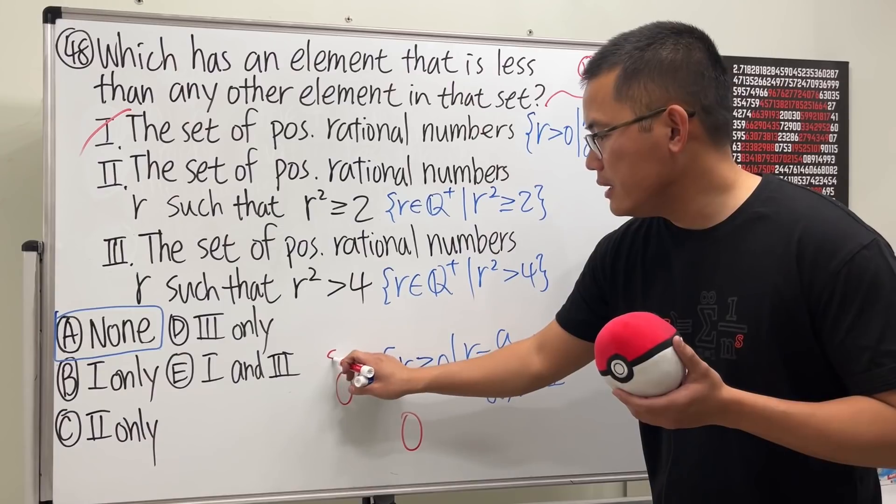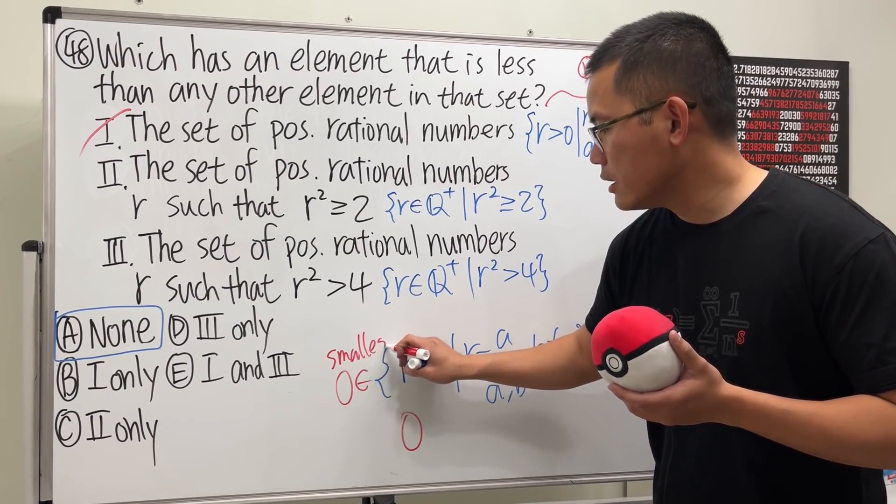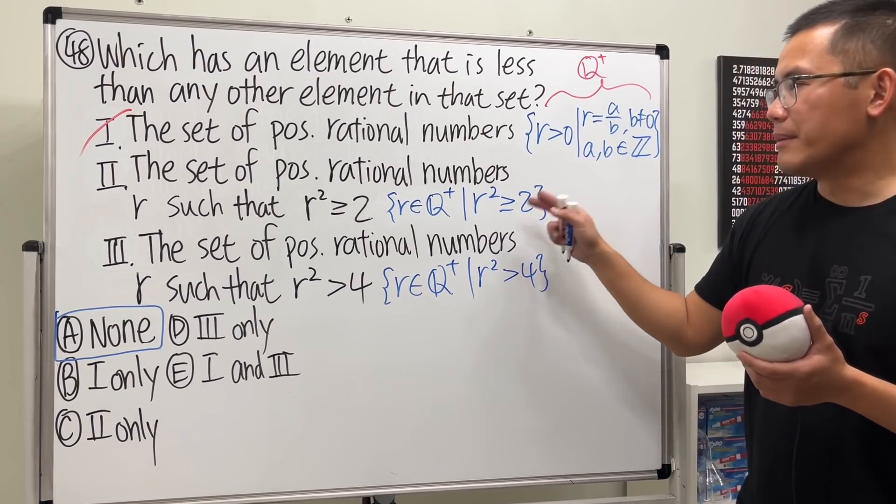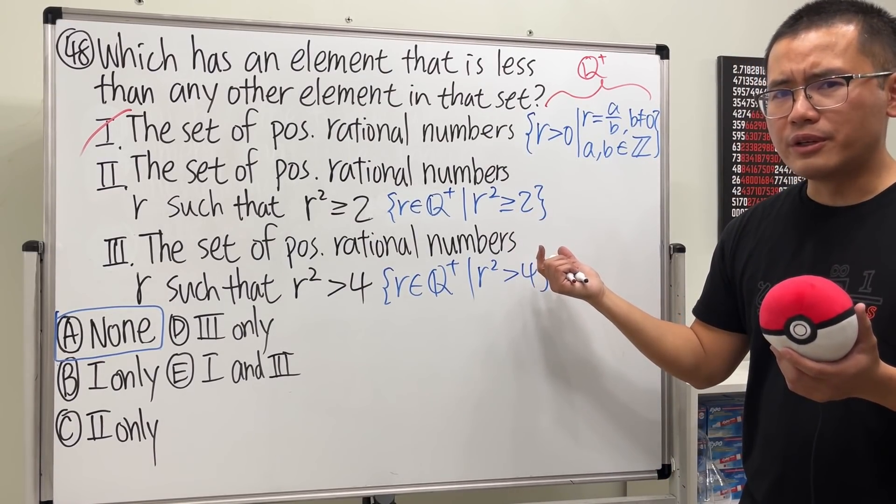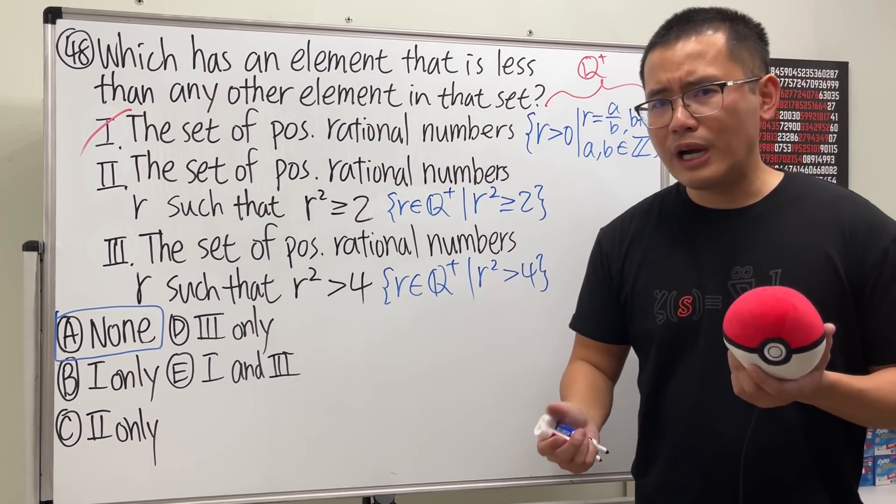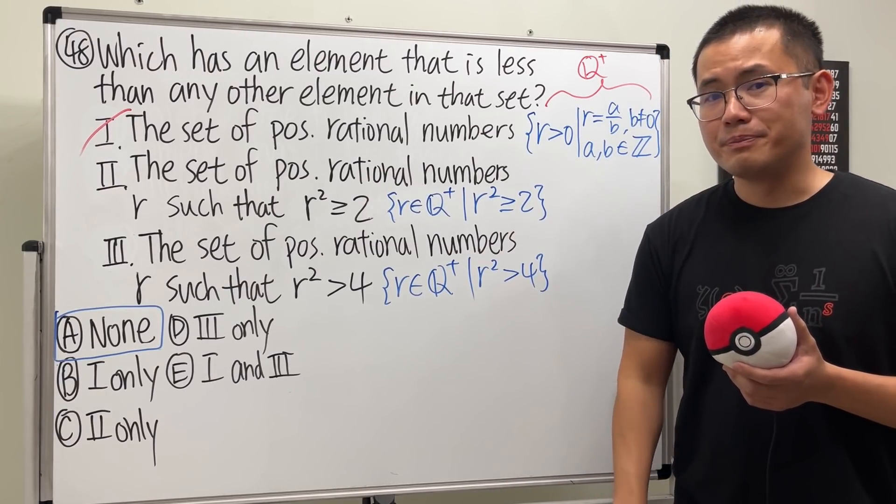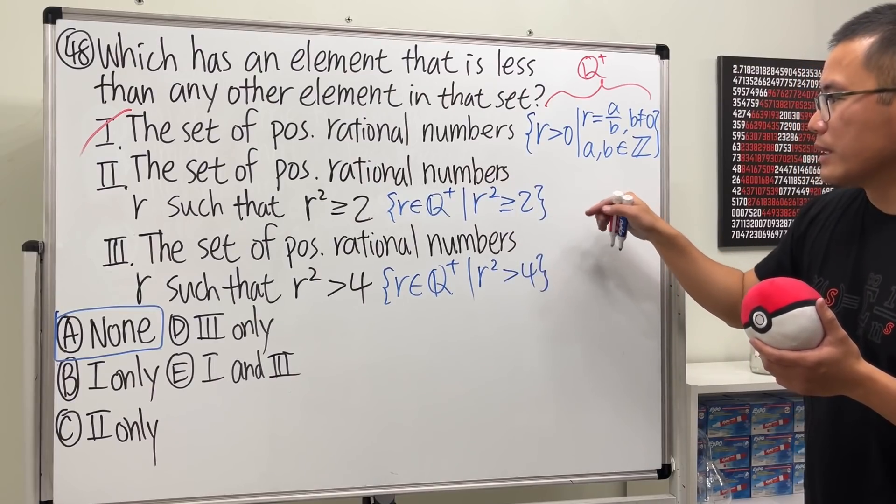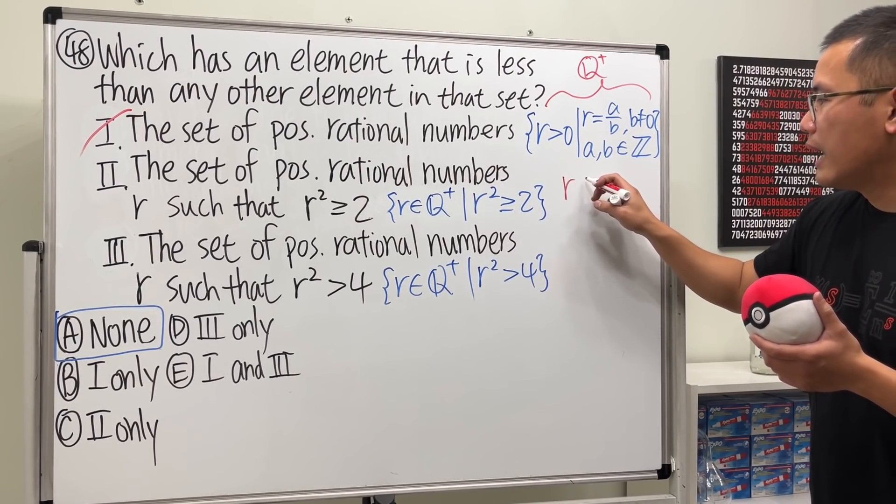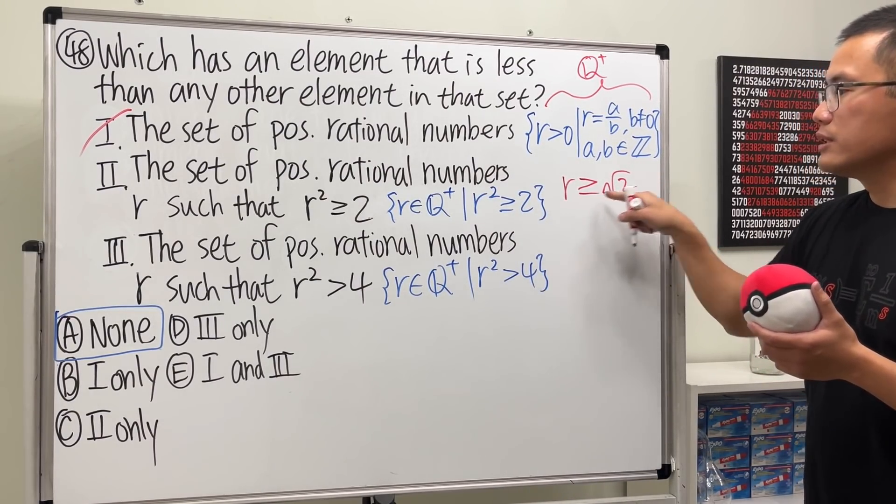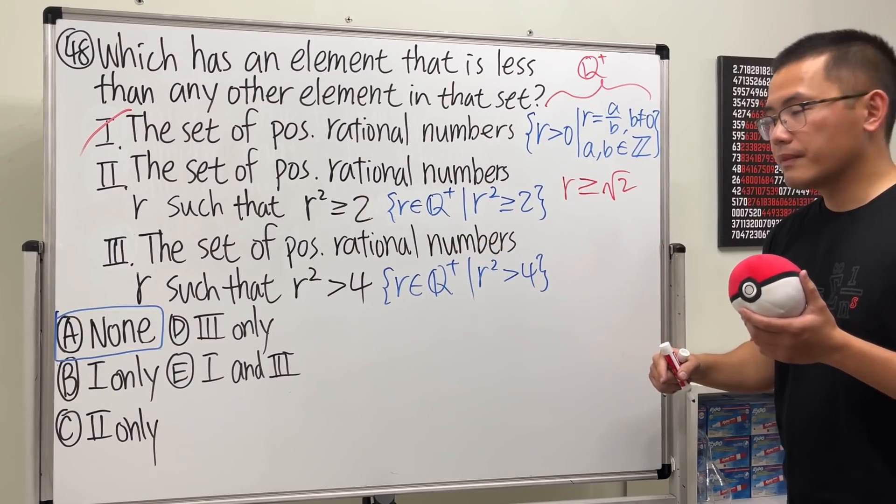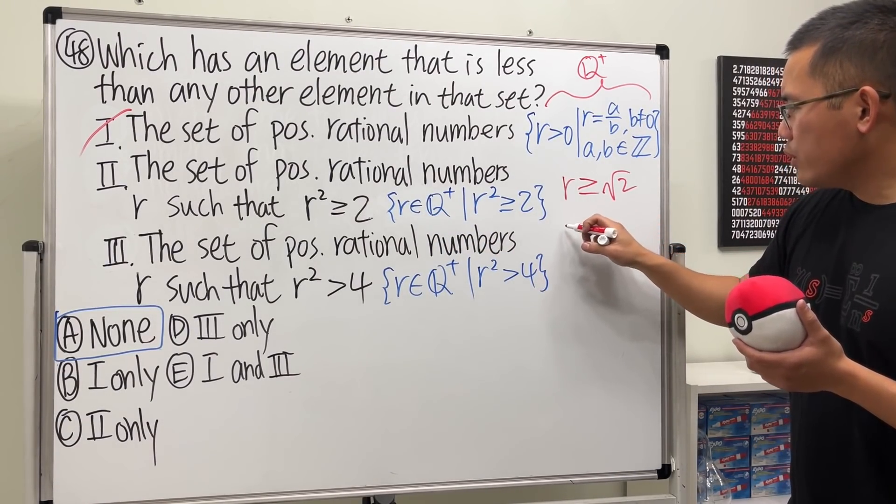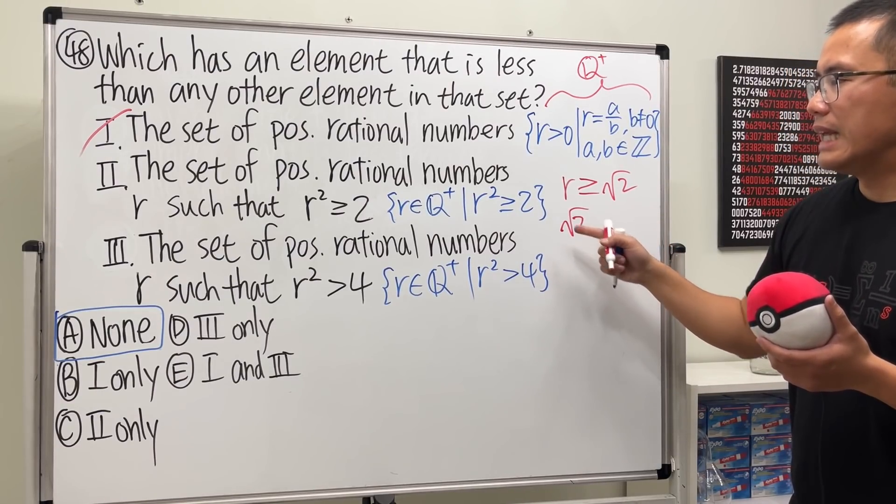Okay, now let's take a look at number two. And per our discussion earlier, because we have the equal sign here, so we should have a smallest element, right? No. Because imagine you want to solve this inequality. Take the square roots on both sides, then you are saying r has to be greater than or equal to square root of two, just the positive version because r is positive.